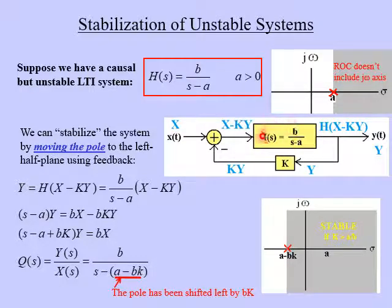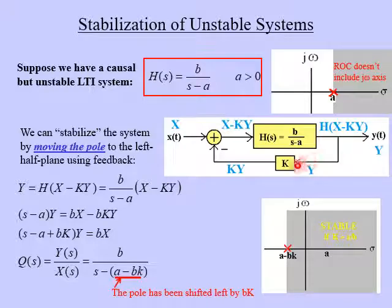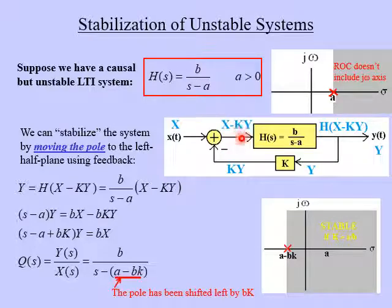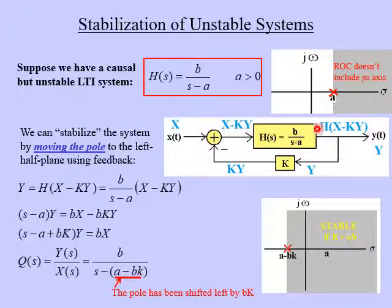Here is our original system H(s) equal to B over S minus A. This system is not stable, but we're going to take the output of the system and bring it back through a feedback loop and multiply it by a constant K. So our output Y gets multiplied by K to get K times Y. Remember, this is a negative feedback system, so the input X is added to negative KY, giving us X minus KY. That signal goes into our original system H.